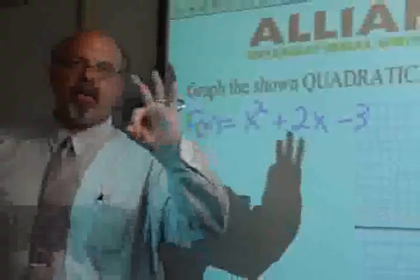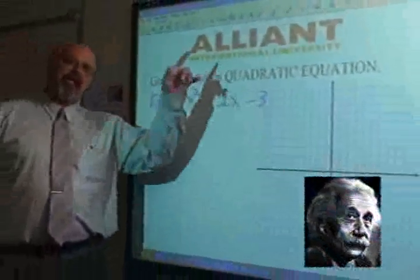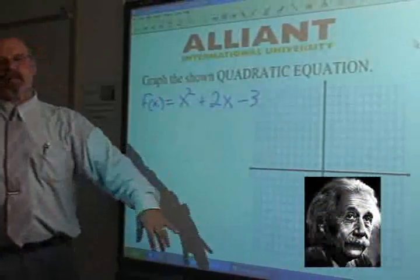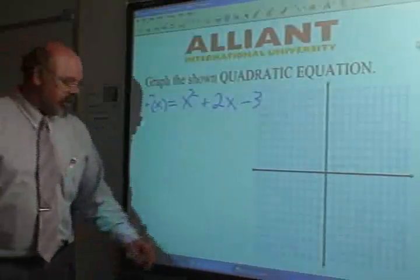Hi. You have to graph a quadratic equation. There's basically three things you need to know about it. Where is its vertex? Is it a smiley face or is it a frowny face? The last thing is the x-intercepts. Where does it cross the x-intercepts?